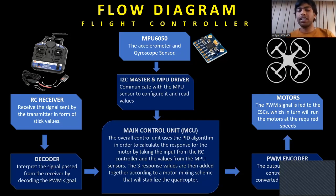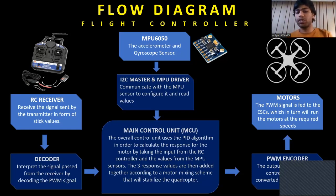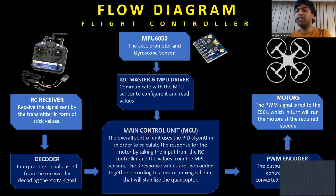The main control unit contains the PID algorithm, which is responsible for calculating the required response of the motors. It takes in the values from the sensor as well as the decoder. The three response values are then combined in a motor mixing scheme that stabilizes the quadcopter. After calculating these PWM signals, they are fed into the PWM encoder, which calculates the signals and feeds them to the ESCs.